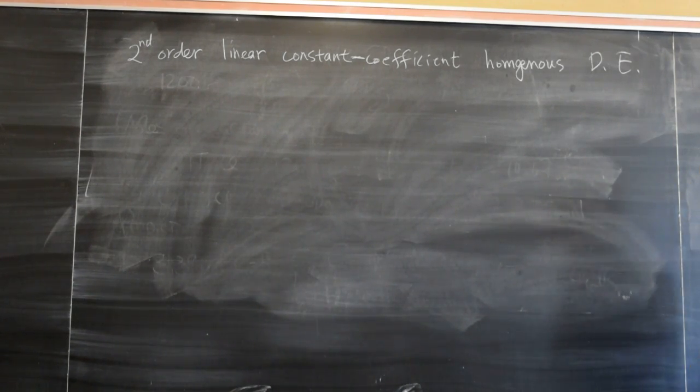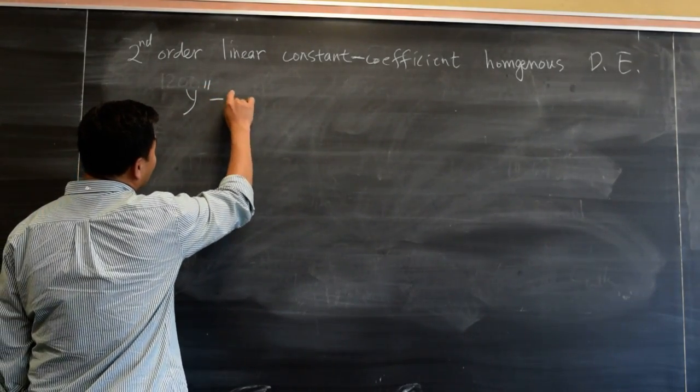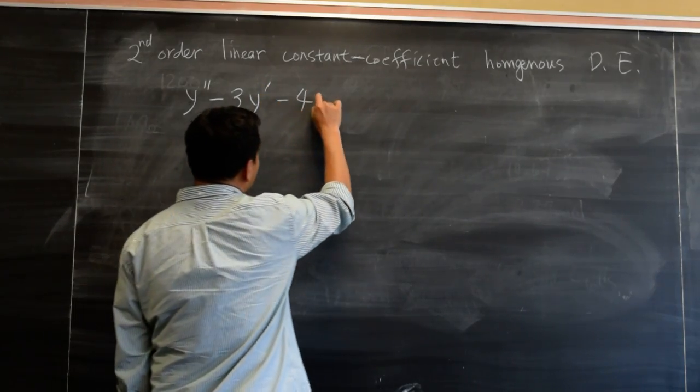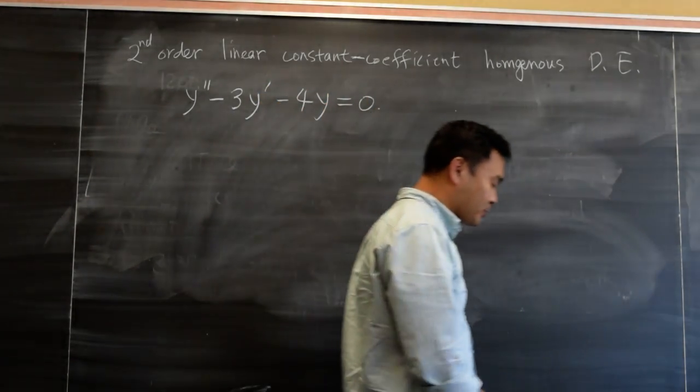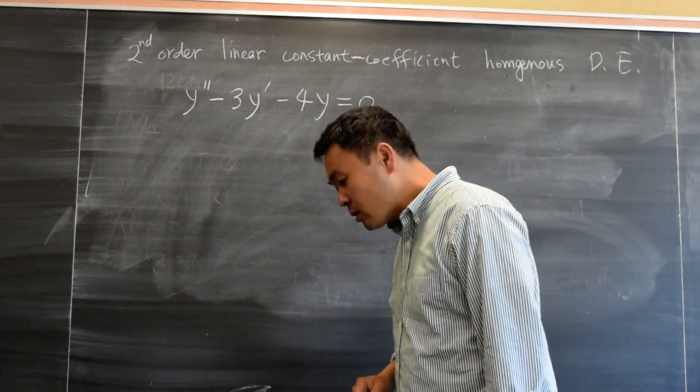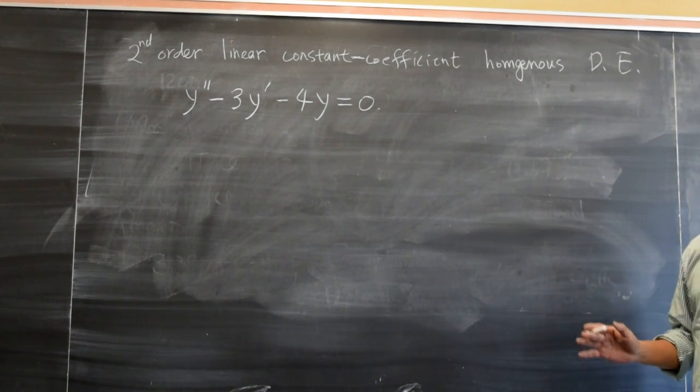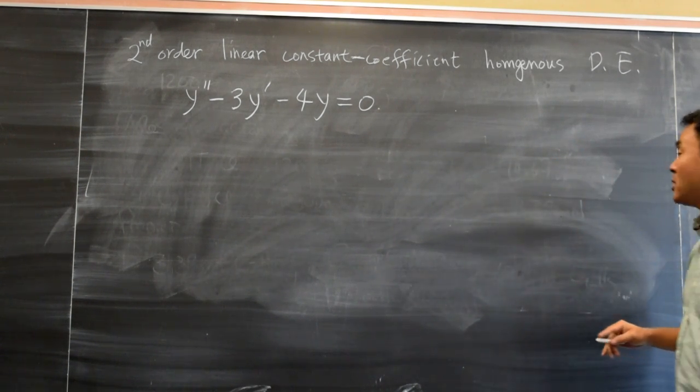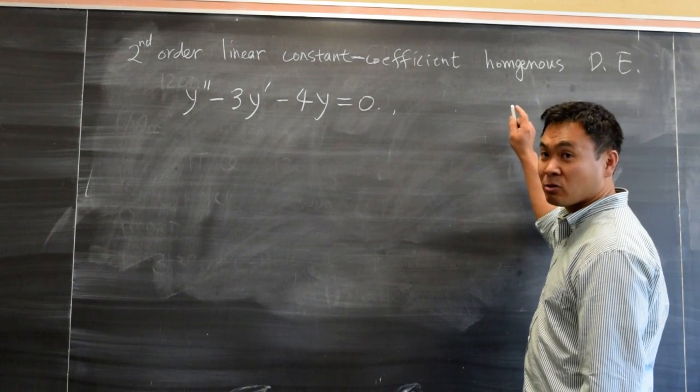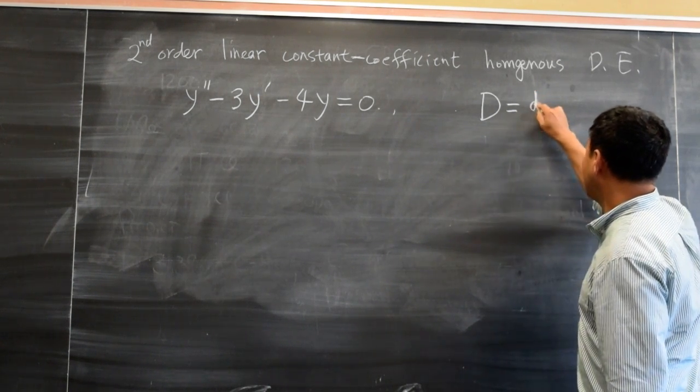All right, so let's say we have the following differential equation: y double prime minus 3y prime minus 4y equal to 0. And my intention is to actually solve it, not make guesses and see that it's a solution. Now, although it can be done without the help of this extra notation I'm using, this notation I'm showing you is quite helpful. So I'm going to use an operator notation for this differential equation, which is you set D as d/dx.